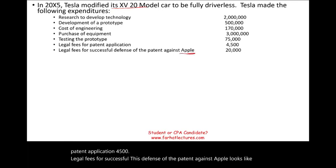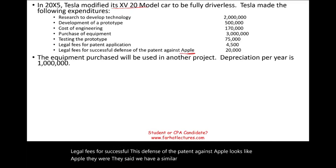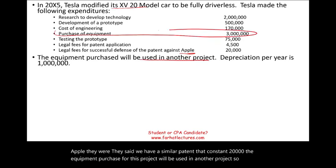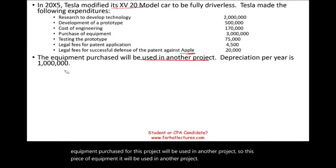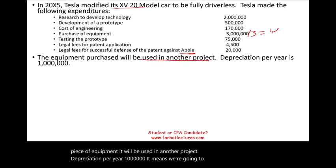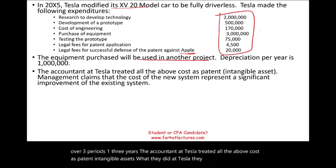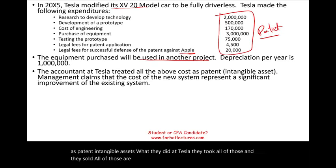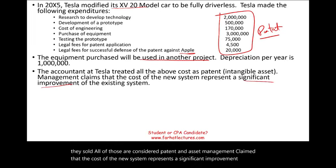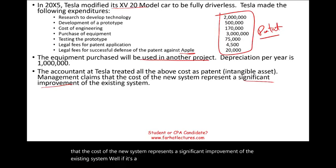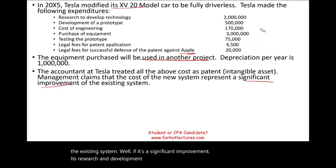The equipment purchased for this project will be used in another project, with depreciation of $1 million per year, meaning it will be depreciated over three years. The accountant at Tesla treated all of the above costs as patent — an intangible asset. Management claimed that the cost of the new system represents a significant improvement of the existing system, which means it's research and development. So if they put everything as patent, we have to fix this problem.